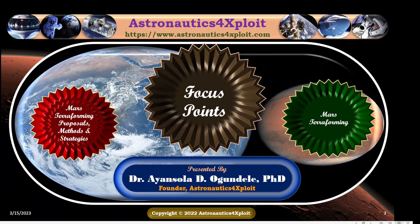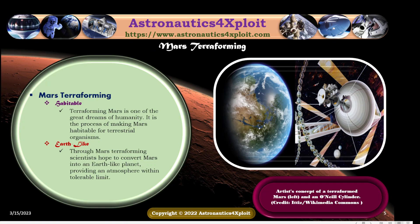One of the methods is to release carbon dioxide gas trapped in the Martian surface to thicken the Mars atmosphere and act as a blanket to warm the planet. In a bid to achieve the notion of terraforming the inhospitable Mars, efforts are ongoing to develop cutting-edge and state-of-the-art technologies. Mars terraforming is one of the great dreams of humanity — the process of making Mars habitable for terrestrial organisms, converting Mars into an Earth-like planet with an atmosphere within tolerable limits. The picture here shows this concept of a terraformed Mars.